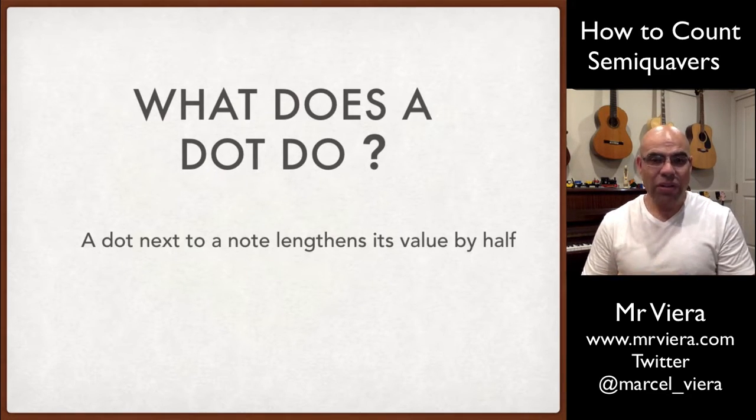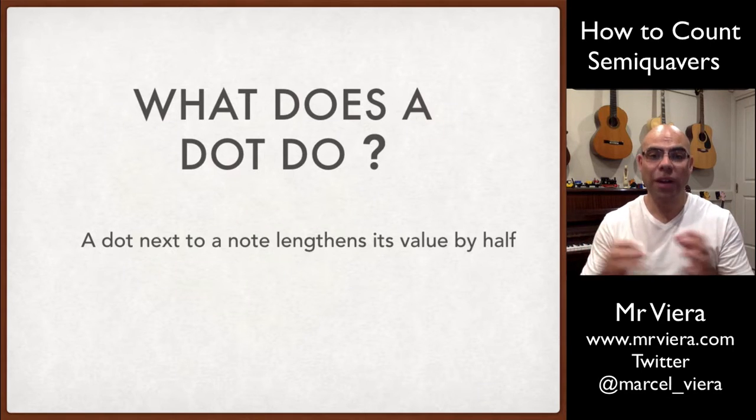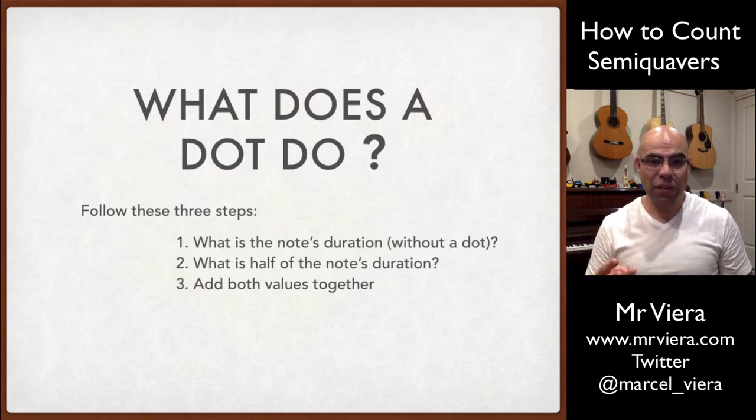So you get the note, you get half of that note's value and you add them together. So there's three steps that we need to follow.